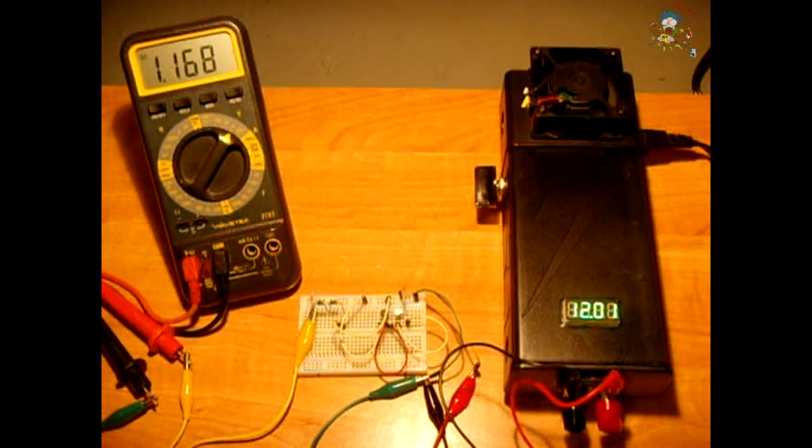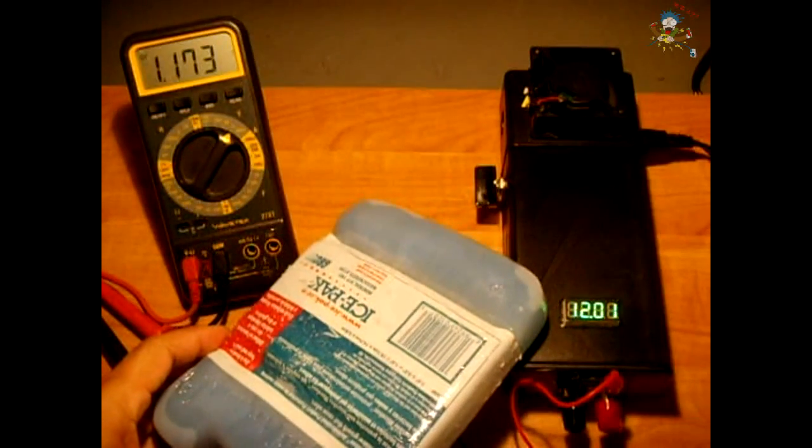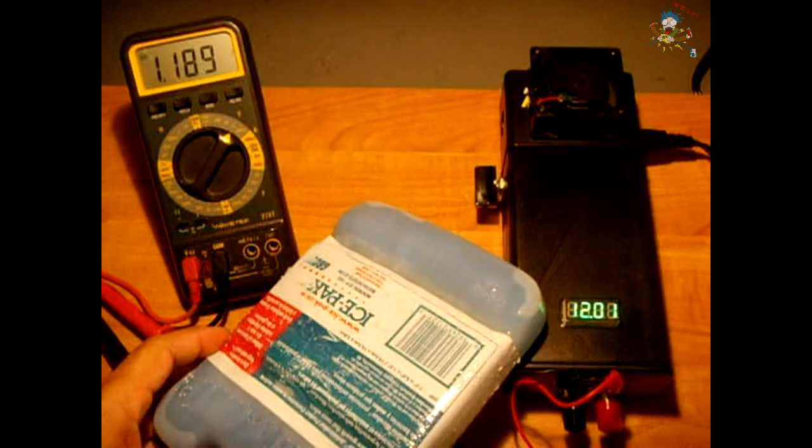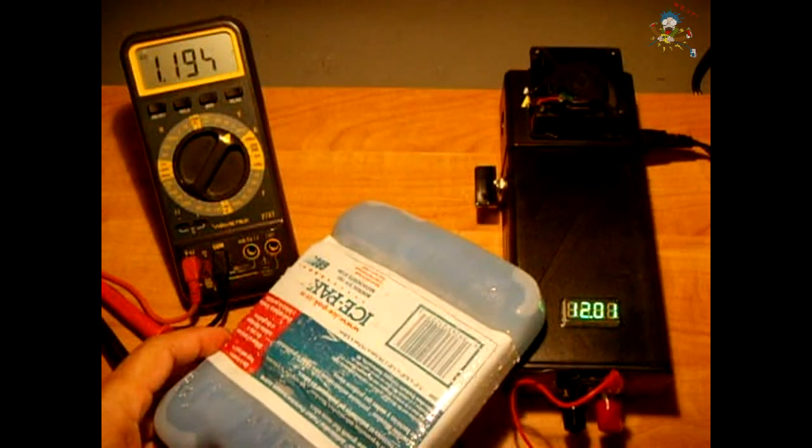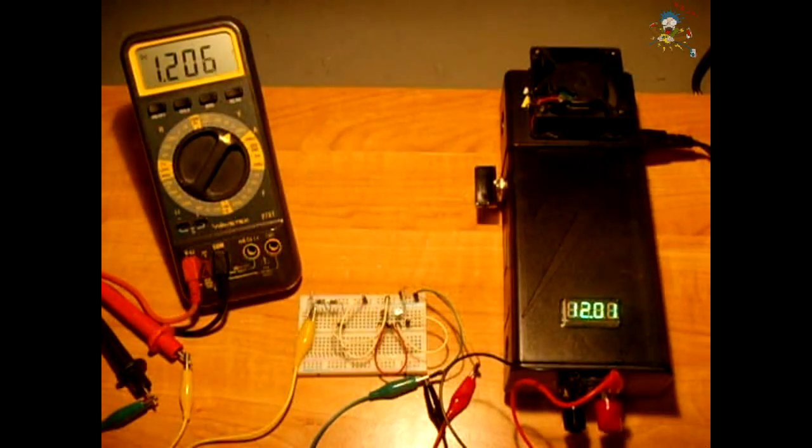So you can see we're back to 1.16. I'm going to take this block of ice and hold it right there. And you can see it climbing. Now it has the opposite effect. Cold on the N and P junction inside the diode is causing the voltage to climb. Let me take that away. It will go back.